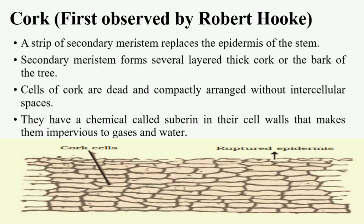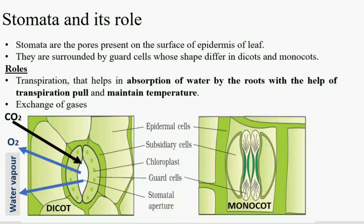Stomata are pores present on the surface of the epidermis of a leaf, surrounded by guard cells whose shape differs in dicots and monocots. As seen in the figures, in dicots the guard cells have a kidney shape, whereas in monocots the guard cells have a dumbbell shape. The guard cells change shape to regulate the rate of transpiration. Transpiration is the removal of water in the form of water vapor — it is a type of evaporation.